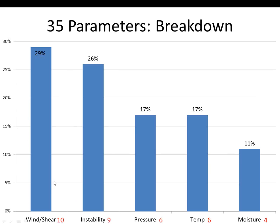To give a breakdown of that spectrum: 10 of the 35 parameters have something to do with wind speed, direction, or vertical wind shear. Nine — about 26 percent — relate to instability. Six involve pressure or heights or pressure/height change. Temperature and moisture round them out. Obviously instability, temperature, and moisture are interrelated, so there is some dependence among parameters.